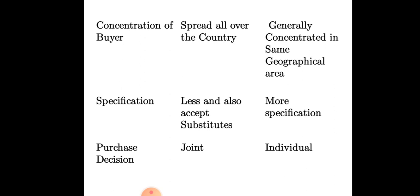The next point is concentration of buyers. Consumers are spread all over the country or across the geographical area — they are not concentrated in one place. But when we talk about organizations or companies, they are generally concentrated in the same geographical area, such as an industrial area.